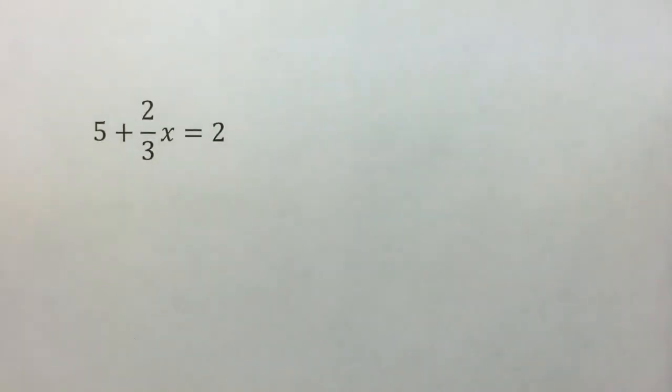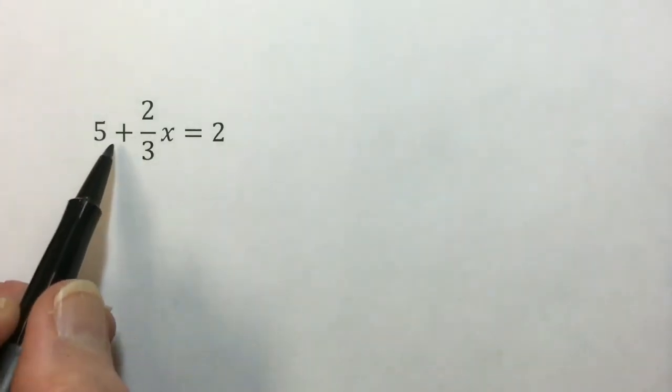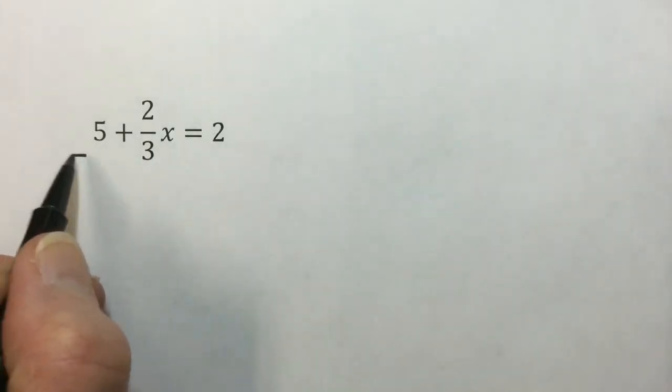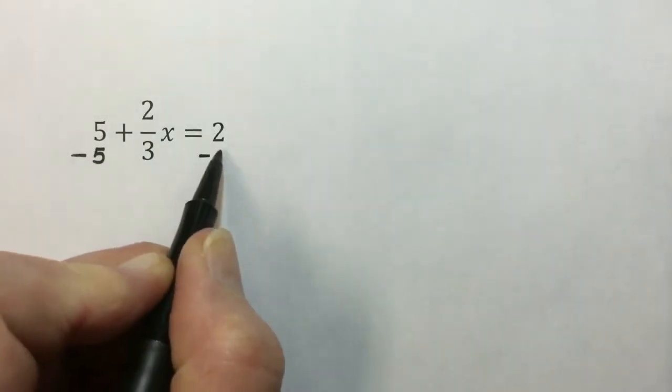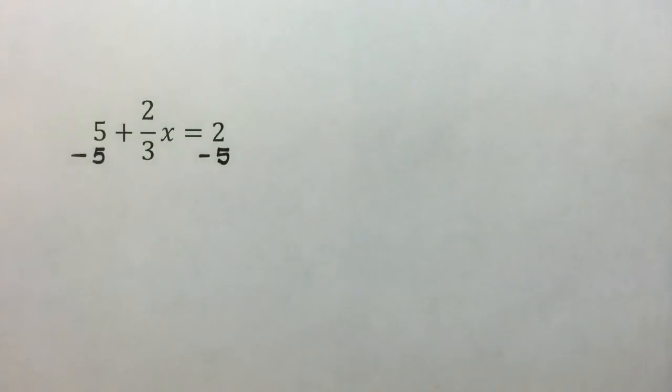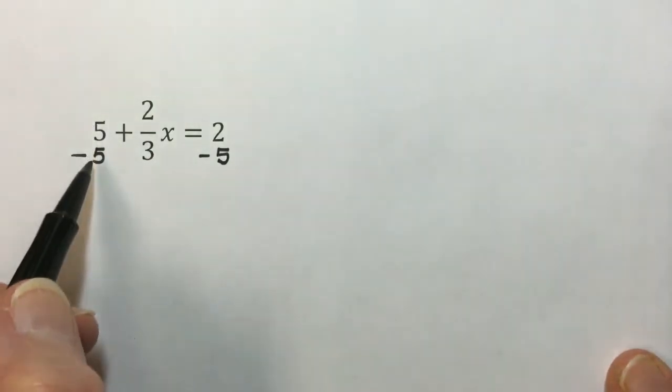This next problem will use the same strategy. We have more than one operation. We will go backwards through the order of operations and do the least priority, which is this addition of 5. Using the addition property, we will add a negative or subtract a 5 from each side. 5 minus 5 cancels out.